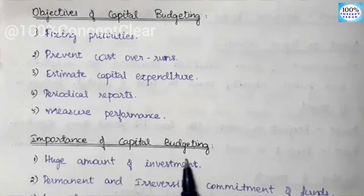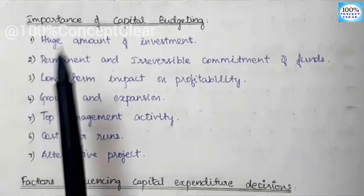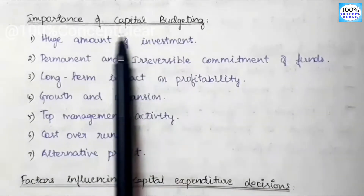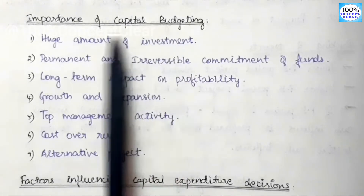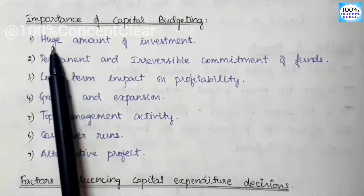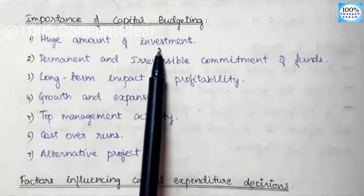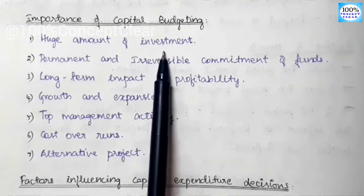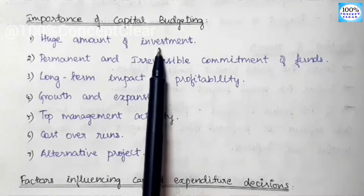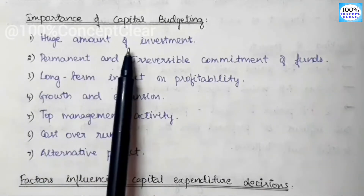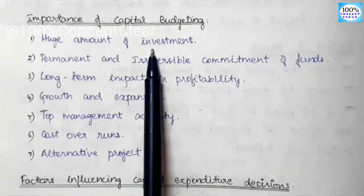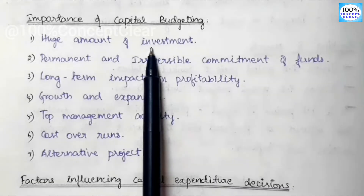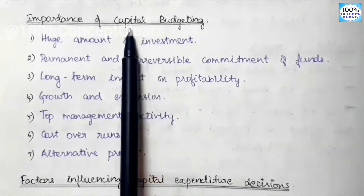Next is the importance of capital budgeting. The first importance is the huge amount of investment. When we invest in projects and fixed assets, it involves a huge amount. We invest that large amount hoping it will be profitable, and if it is not profitable, we need to know why — that is why we perform capital budgeting.